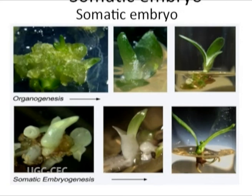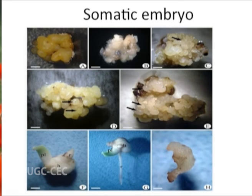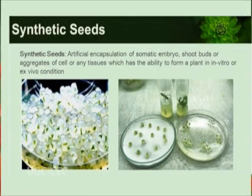Embryos similar to zygotic embryos can be formed from somatic cells through plant tissue culture; such embryos are called somatic embryos. This technique is employed in agriculture and forestry to generate new plants from somatic cells for propagation of desired plants. Somatic embryos can be encapsulated with chemicals like gels — a technique called synthetic seed production. Unlike natural seeds, no endosperm or seed coat is formed around a somatic embryo.